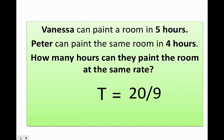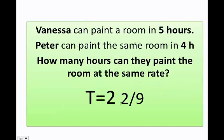We need to convert this fraction into a mixed number. Once I do that, I get that if they both work together, they're going to paint the room in two and two-ninths hours — and that makes sense. If Vanessa works by herself it takes five hours, if Peter works by himself it takes four hours, but if they both work together it's about two hours and some minutes.